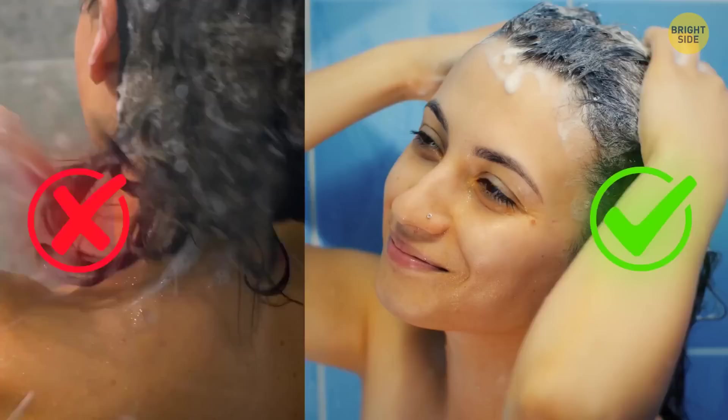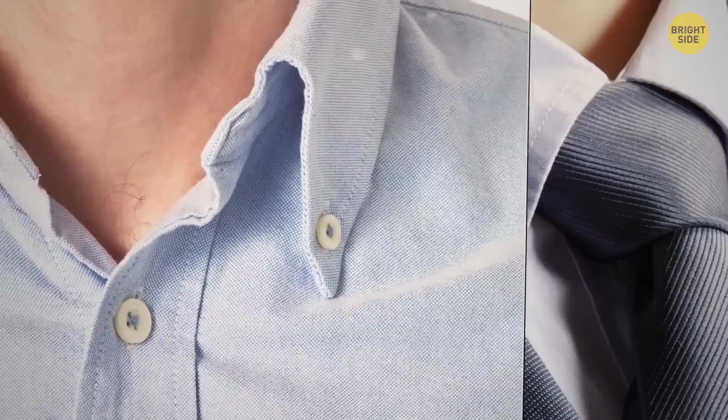A button on the reverse side of a shirt collar is needed to hold a tie in place. Anyway, this button was designed for slim ties that are not that popular today, so this button is only an element of design.